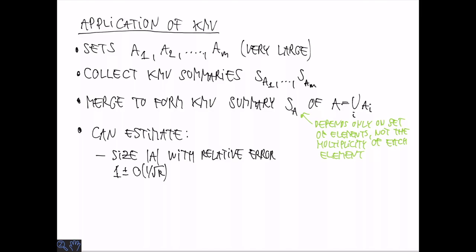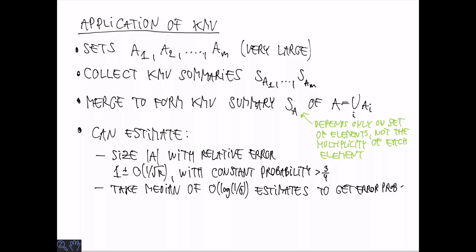Now we have a summary of the union. We can use it to estimate the size of the union with small relative error. In terms of K, it's 1 plus minus O of 1 over square root of K. This is going to work with constant probability. If we want something more certain, we can use repetition and take several estimates and take the median to get an estimate that we are quite certain of. If each estimate is accurate with probability 3 quarters and we take the median of roughly log 1 over delta estimates, then it's easy to show using Chernoff bounds that the probability that we get a bad estimate in the median can be bounded by 1 minus delta. Finally, if we are interested only in certain elements in some sets Q, we can also estimate the intersection size of A and Q by looking at the elements in the merge sketch that belong to Q.